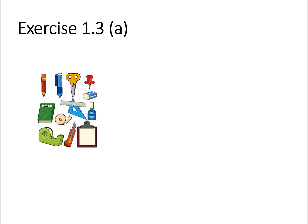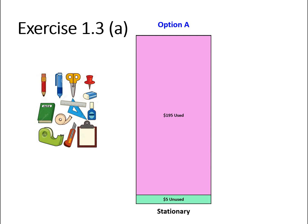Question 1.3 deals with a situation where a business bought $200 of stationery. At the end of the year, there's $5 left, meaning $195 has been used. Option A would be to record a $195 expense and a $5 asset.